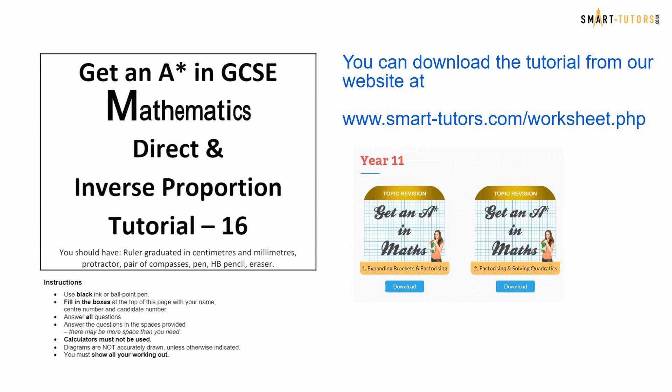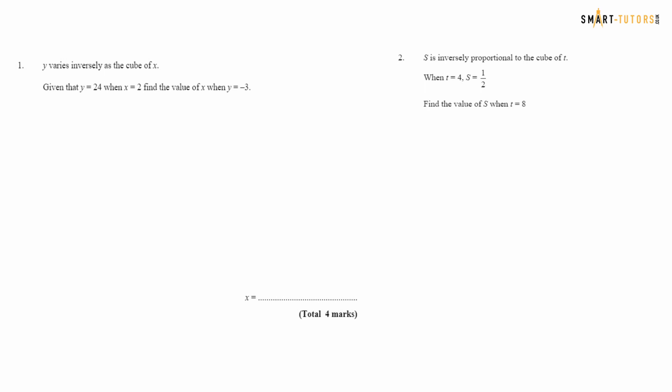Let's look at the questions now. Question number one: y varies inversely as the cube of x. So y is inversely proportional to the cube of x, meaning y is proportional to 1 over x cubed. Inversely means 1 over.